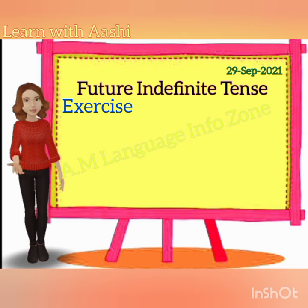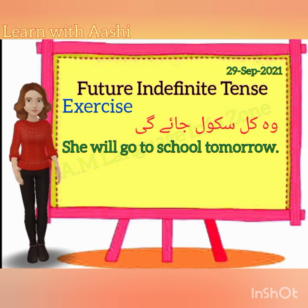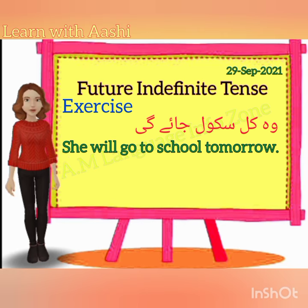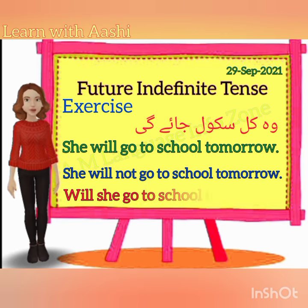Woh kal skool jai gi — She will go to school tomorrow. The negative: She will not go to school tomorrow. The interrogative: Will she go to school tomorrow?